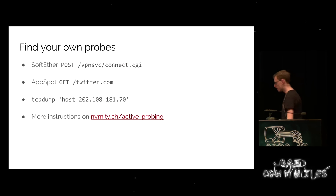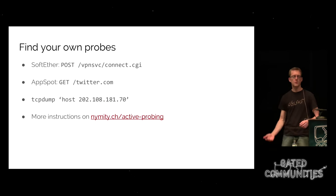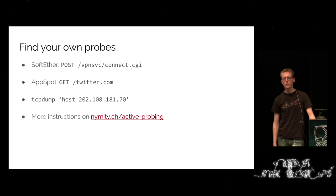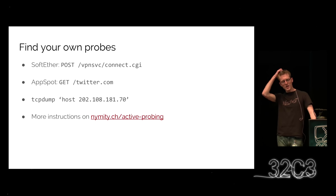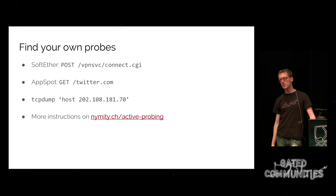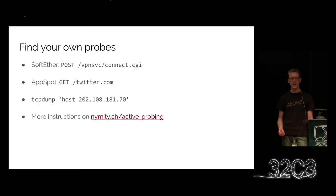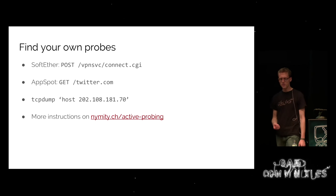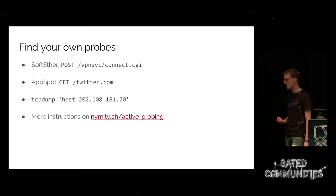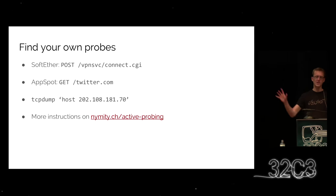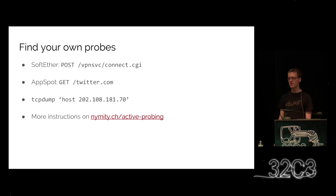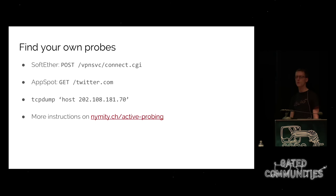On our project website we have instructions you can run on your web servers to find your own probes. This can be as simple as grepping for specific POST and GET requests in your web server logs — for SoftEther or the AppSpot probes. You could also tcpdump for that peculiar dedicated IP address. It looks like there's no activity these days, but that's probably a foolproof way to maybe get some interesting stuff.